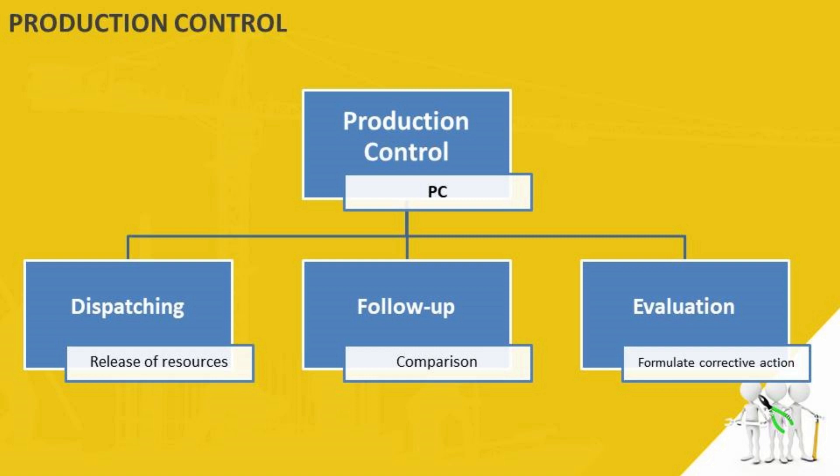The most important factor that affects production control is strikes by the labor. That is why management has to be very much connected and humble towards the labor union, otherwise strikes will impart unprecedented downtime to the industry.